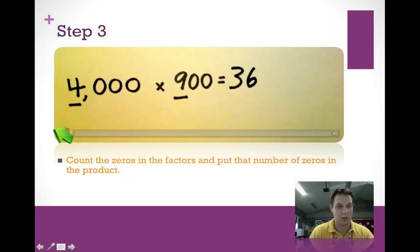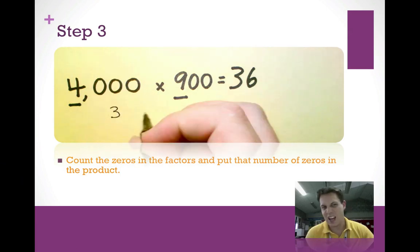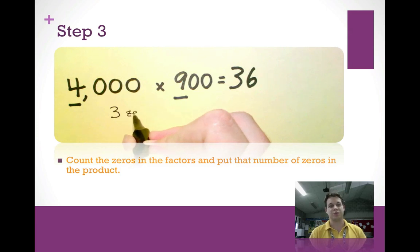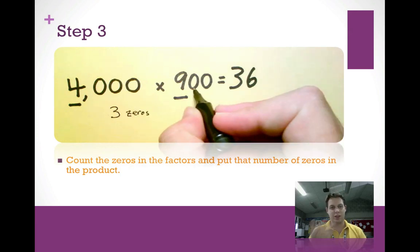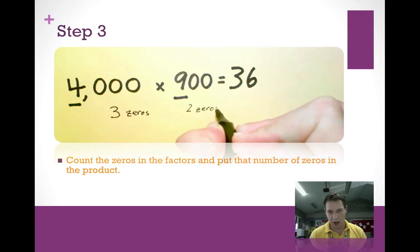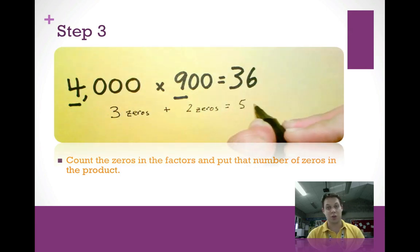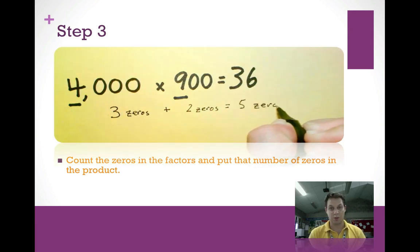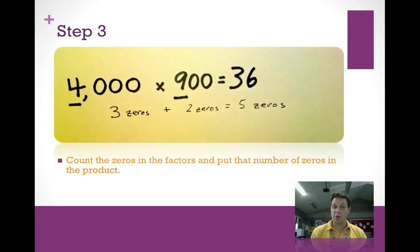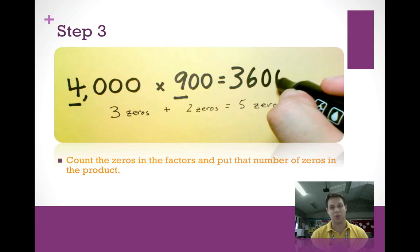Step three: count the zeros in the factors and put that number of zeros in the product. We count one, two, three zeros in 4,000, and two zeros in 900 — that's three plus two, which is five zeros total. We put those five zeros on our product. Counting back and placing commas, our answer is 3,600,000. Remember, the product is the answer to your multiplication problem.